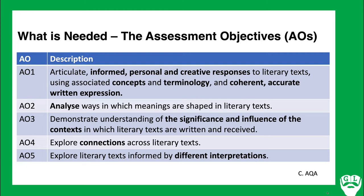AO4 is connections across literary texts, and this Section C question is quite rich in that, so you shouldn't have any problems finding those. AO5 is different interpretations — and many students think you need a Marxist, feminist, or post-colonial critique, but it really isn't that. A different interpretation is just as you read it: any two readers may have different interpretations. While all five AOs have to be present, I tend to give a slight preference to them in numerical order — AO1 is the beating heart, so really focus on what AO1 will look like in your examination.